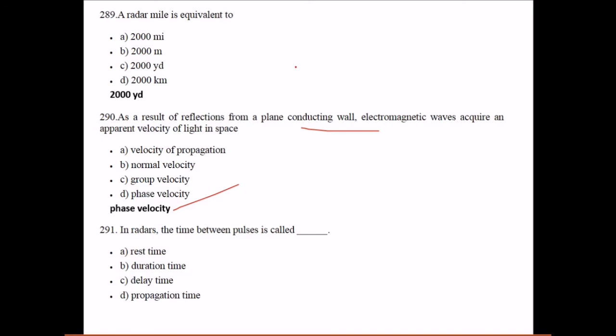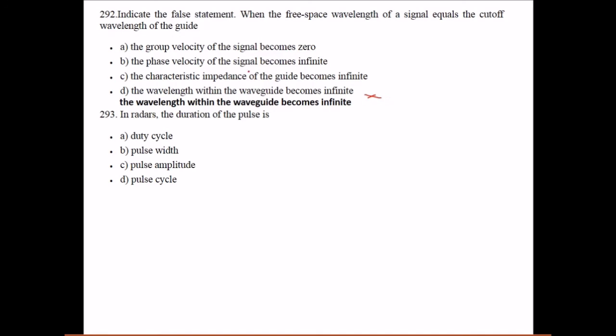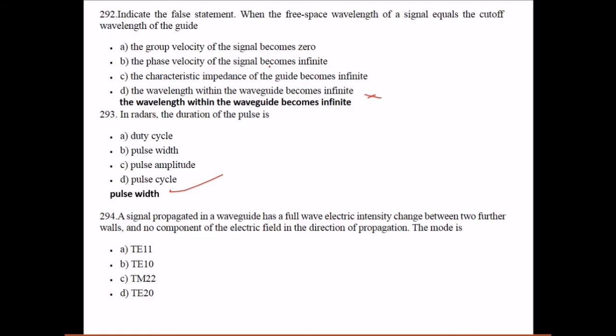In radars, the time between pulses is called fast time. Indicate the false statement: when the free space wavelength of a signal equals the cutoff wavelength of the guide, wavelength within the waveguide becomes infinite. In radars, the duration of the pulse is pulse width. The signal propagated in a waveguide has a full-wave electric intensity change between two further walls and no component of the electric field in the direction of propagation - the mode is TE20.